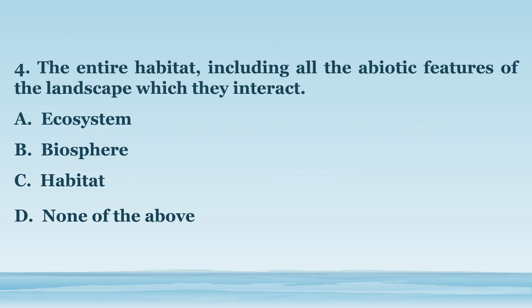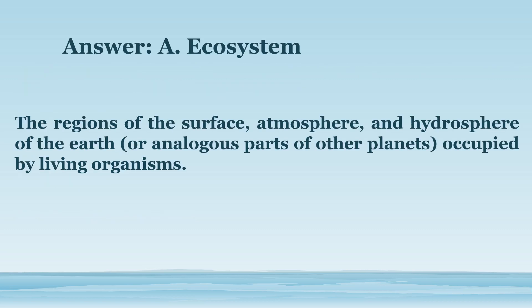Number 4. The entire habitat, including all the abiotic features of the landscape which they interact. A. Ecosystem. B. Biosphere. C. Habitat. D. None of the above. The answer is letter A. Ecosystem. The regions of the surface, atmosphere, and hydrosphere of the earth, or analogous parts of other planets, occupied by living organisms.